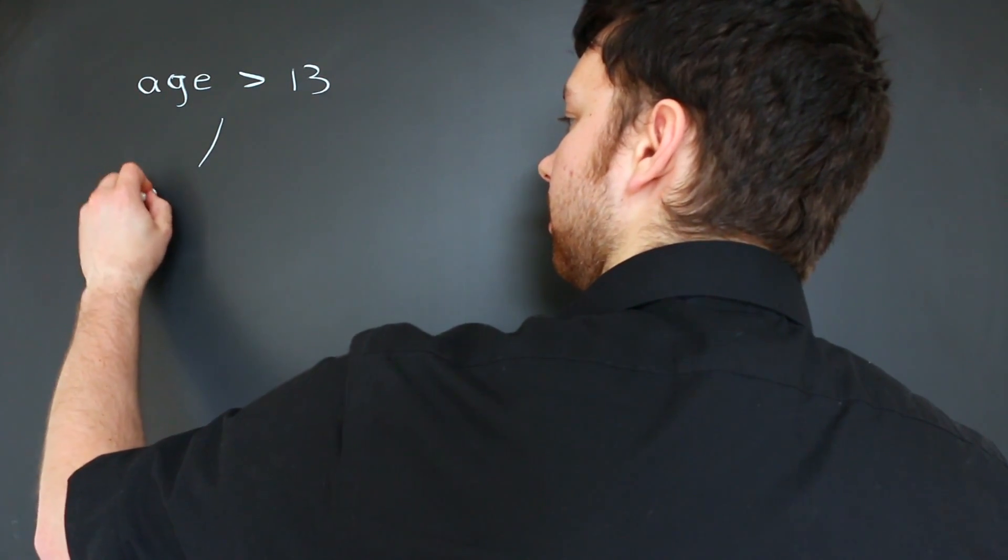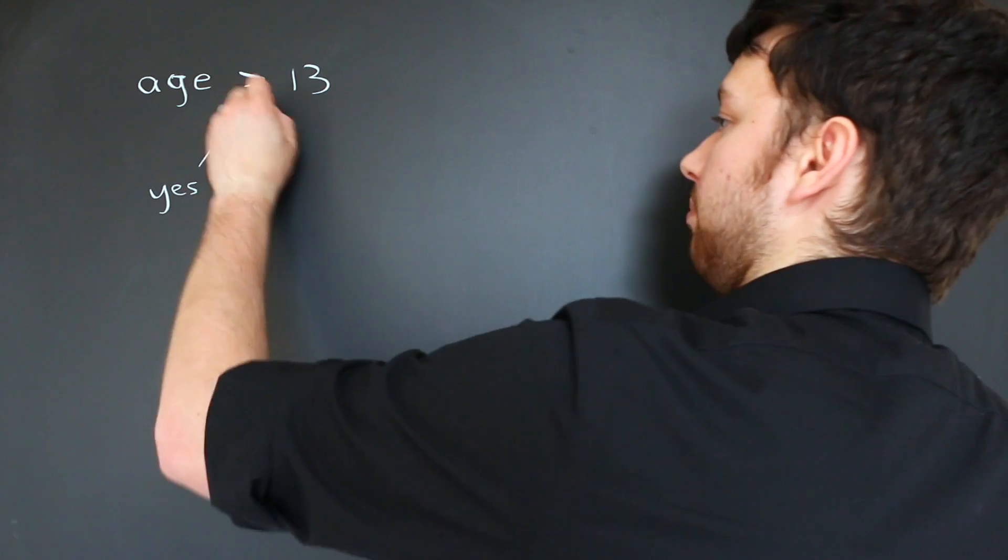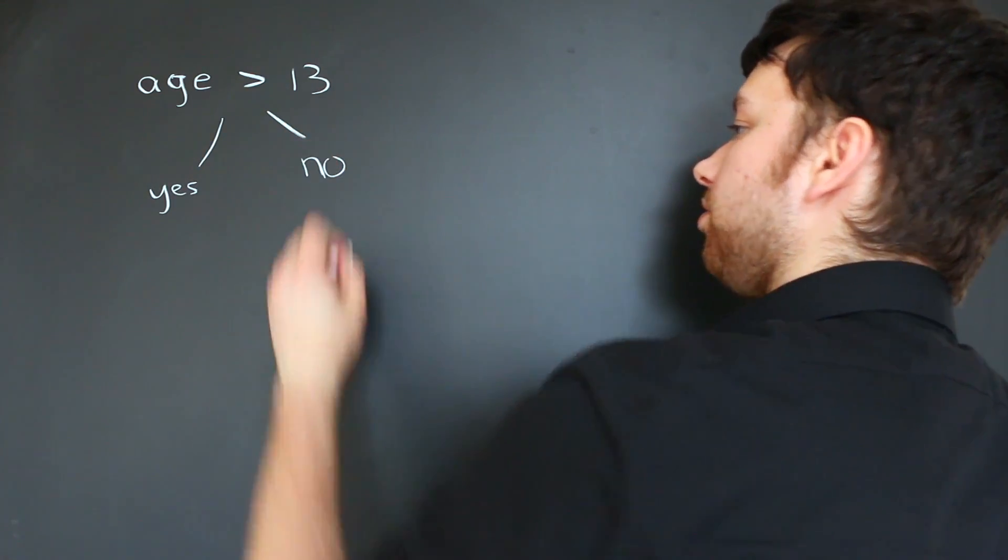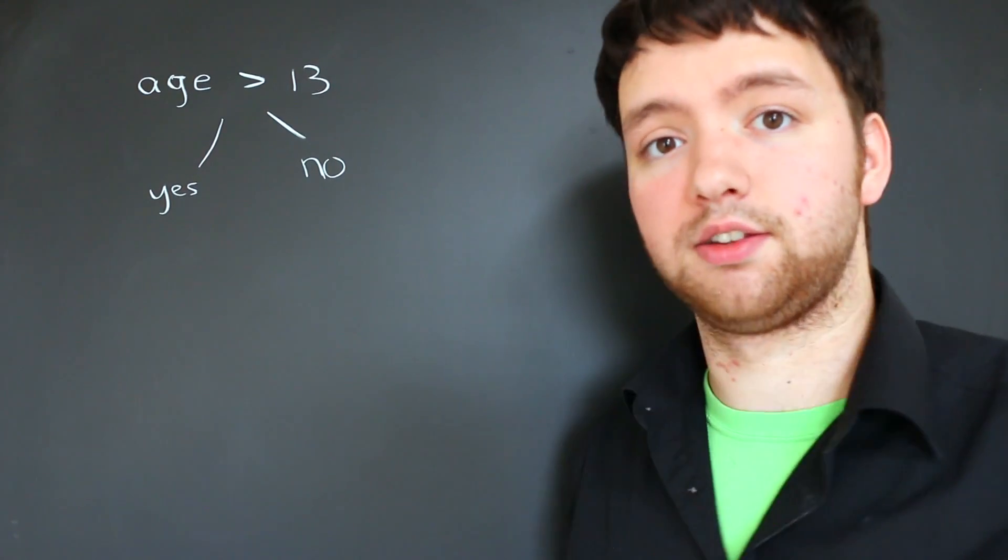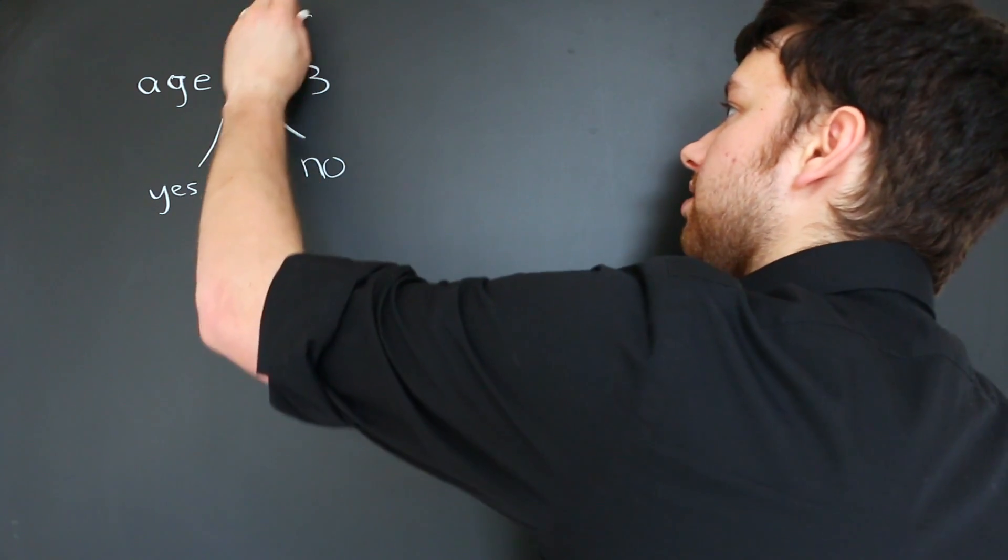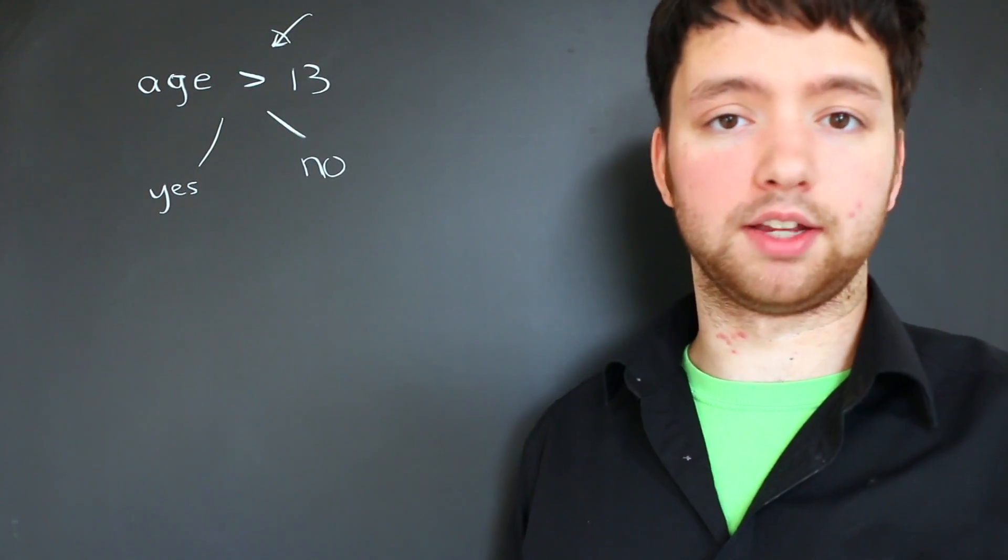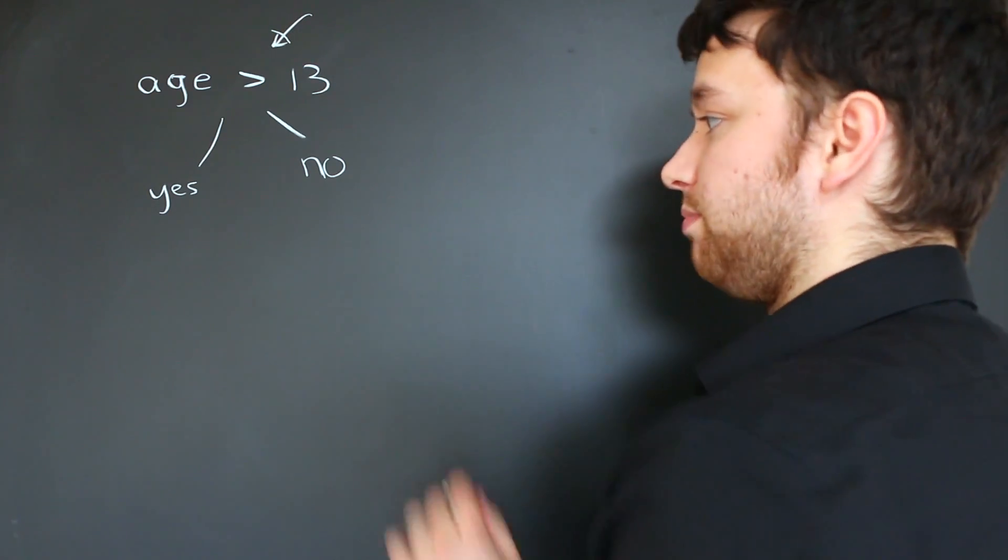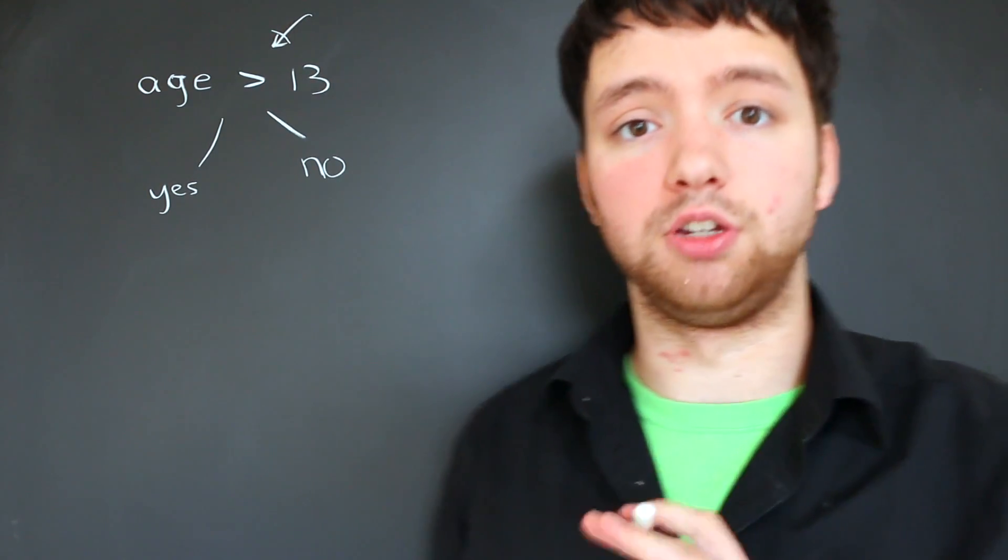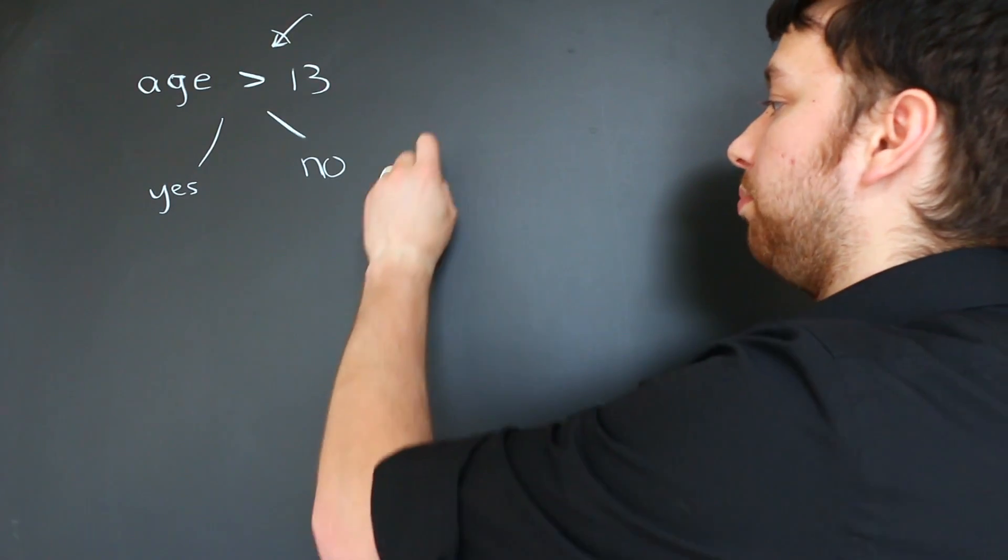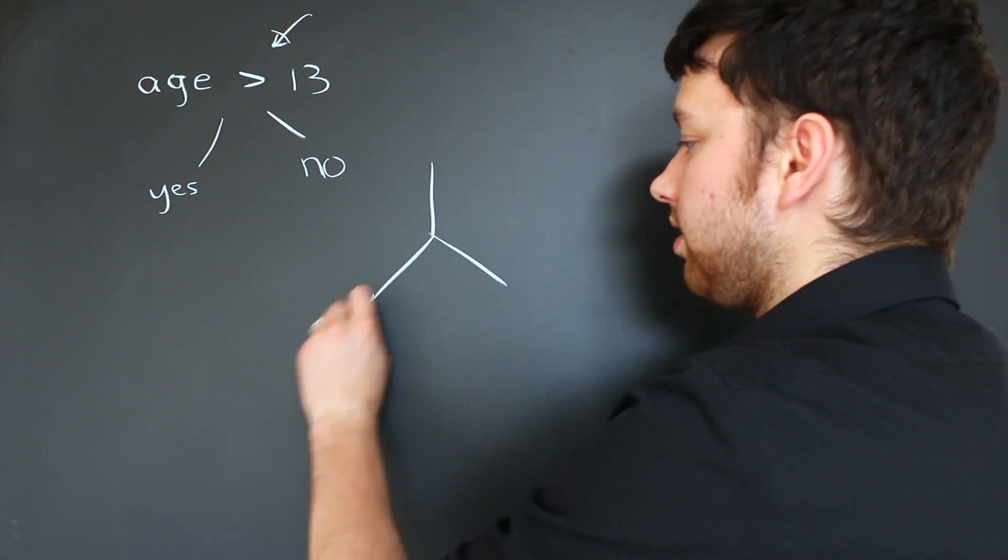then you let the person in the application. If it's false, then they do not have access to the application. So this is a simple expression. But this is not really enough to even make really complex applications. This will allow for simple branching. And in fact, you could basically do any branching you needed because you could branch multiple times like this.